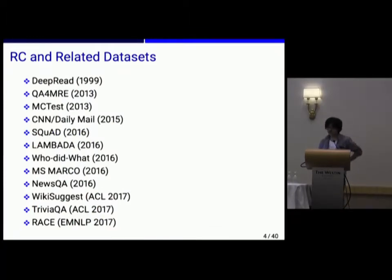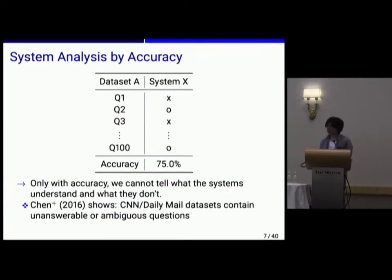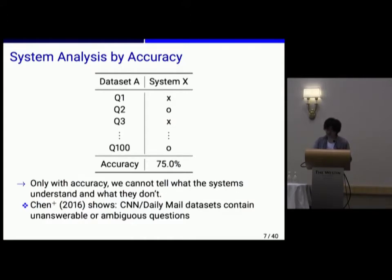As shown in the previous example, RC tasks are used for testing comprehensive understanding of natural language text. Recently, many datasets have been proposed — as far as we know, from last year to now, eight or more datasets have been presented. The size of datasets has been getting bigger and bigger, and now we have more than six million questions in total. Though many questions are invented, we often evaluate systems relying only on simple accuracy. By using accuracy alone, we cannot tell what systems understand and what they don't. In addition, Chen last year showed that datasets may contain unanswerable or ambiguous questions. So we need better metrics for evaluation which enable us to analyze datasets and systems more deeply.